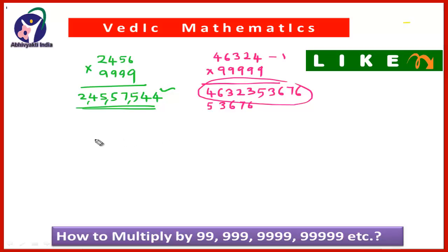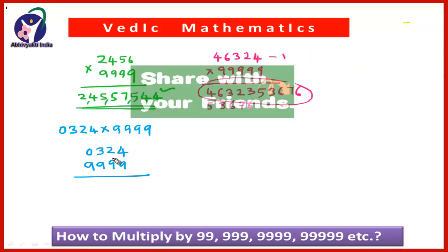Take another example. If you have to multiply 324 multiplied by 99,999. Now here this is 3 digit number and this is 5 digit number. So just put one zero at the end so that this will become 4 digit. And now multiply 0324 by 9999. Then do it as usual. Subtract 1 from this 324 because 0 has got no sense. So here the 324 minus 1 that will give you 323.